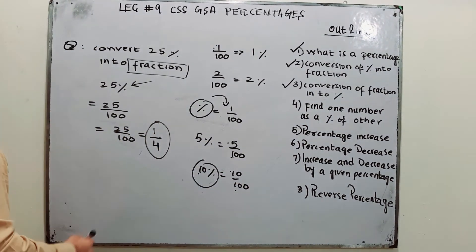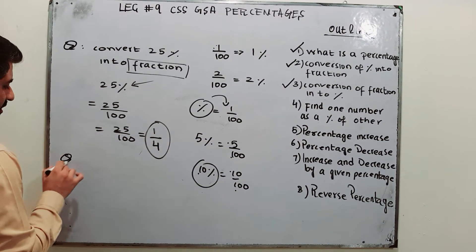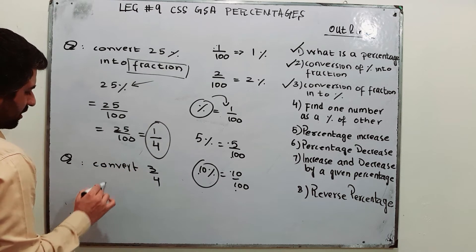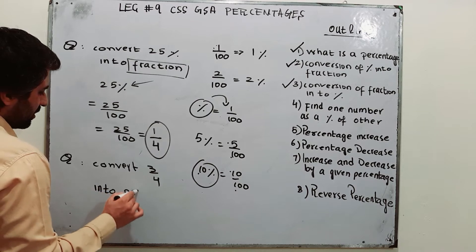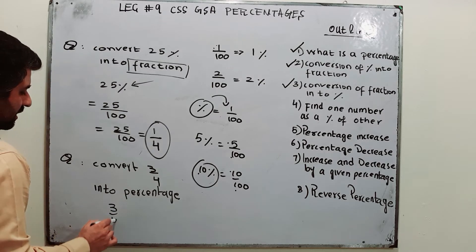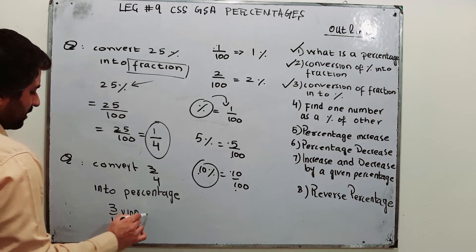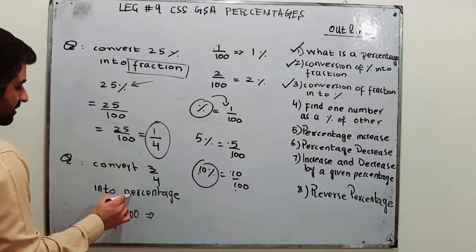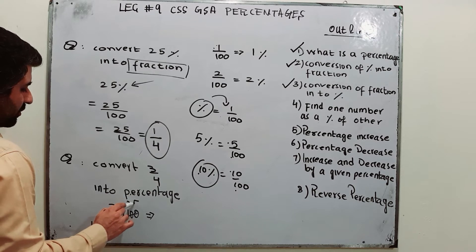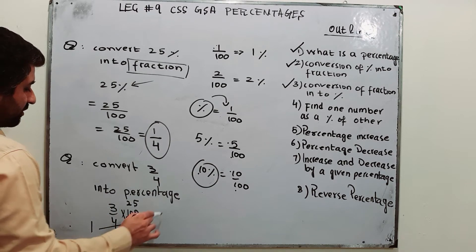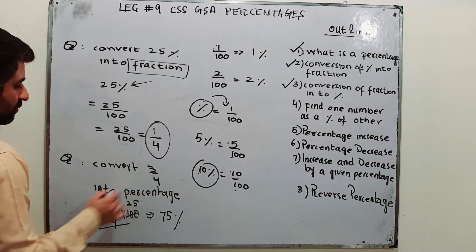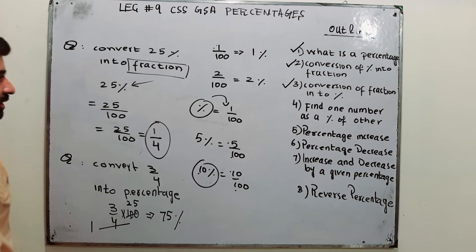Part number 3 is conversion of fraction into percentage. Convert the fraction 3 over 4 into a percentage. You need to multiply your fraction by 100. So 3 over 4 times 100: 100 divided by 4 is 25, and 25 times 3 equals 75 percent. So conversion of fraction into percentage requires multiplication by 100.